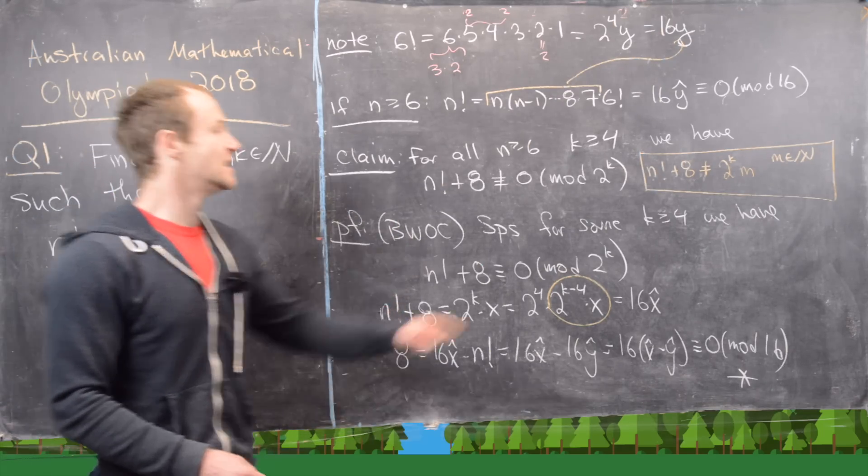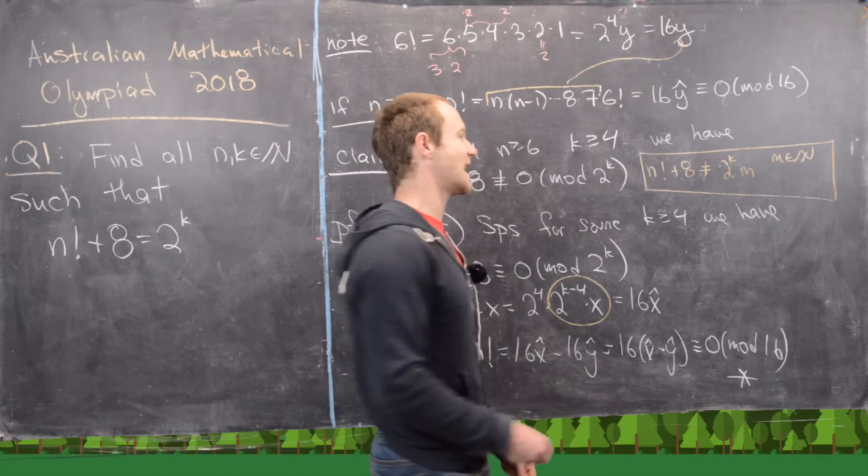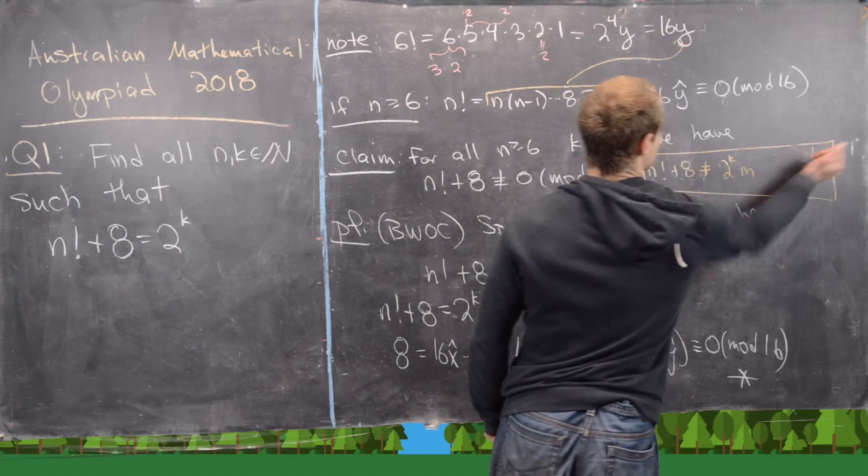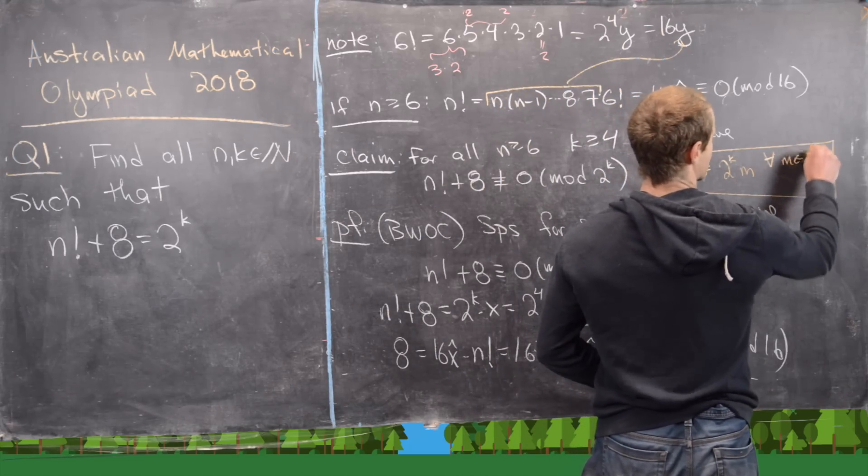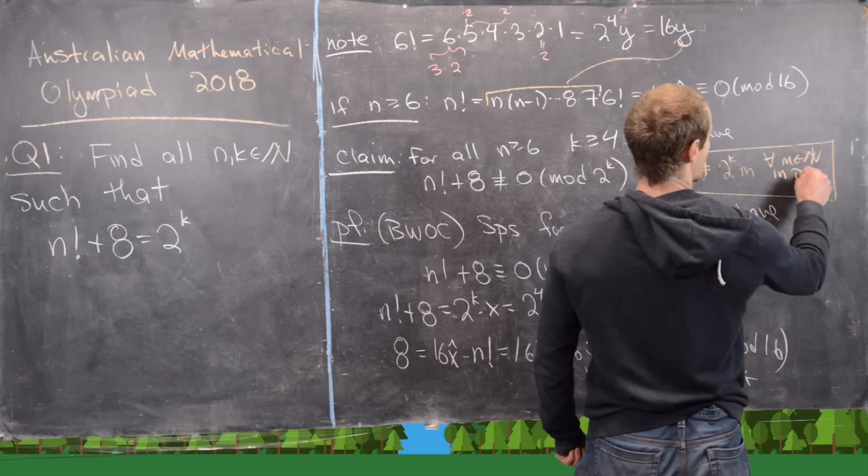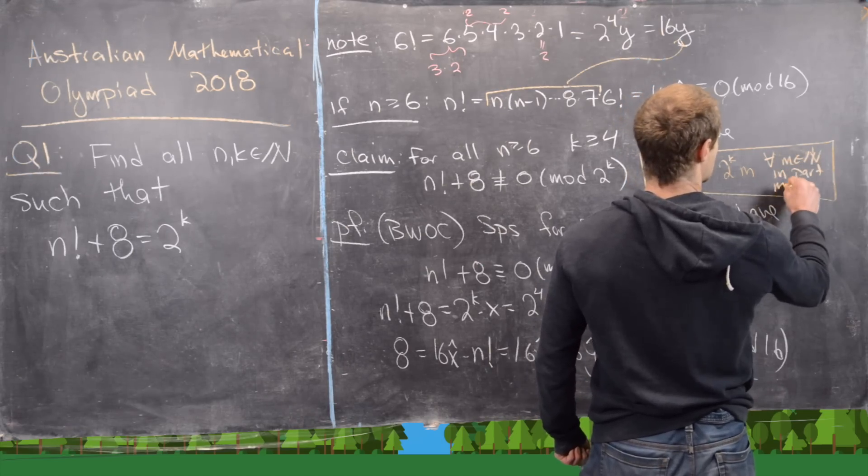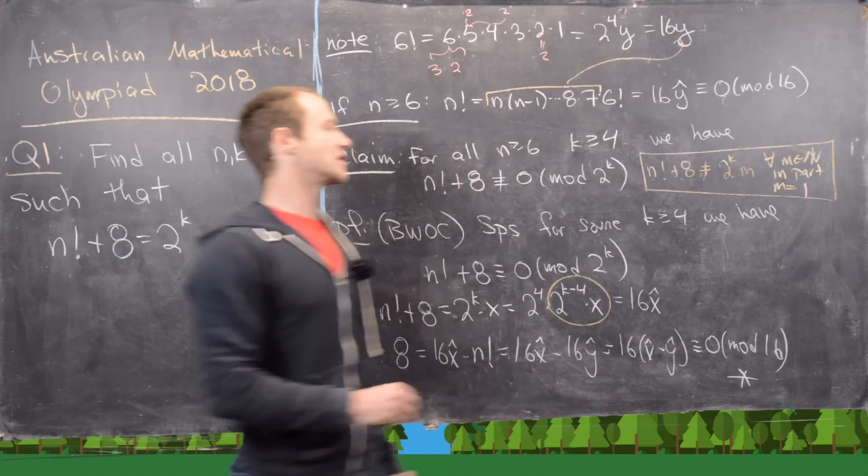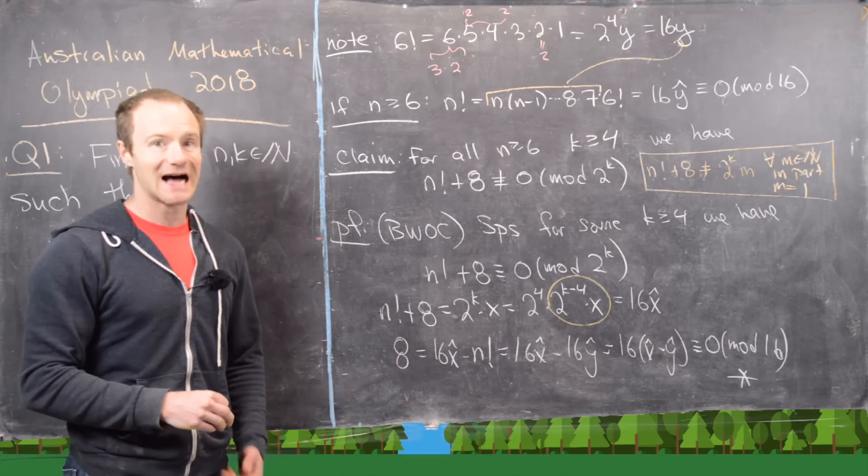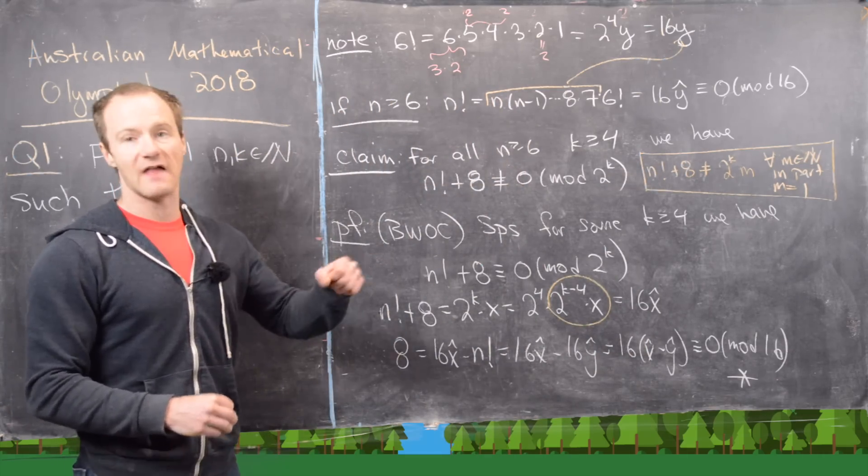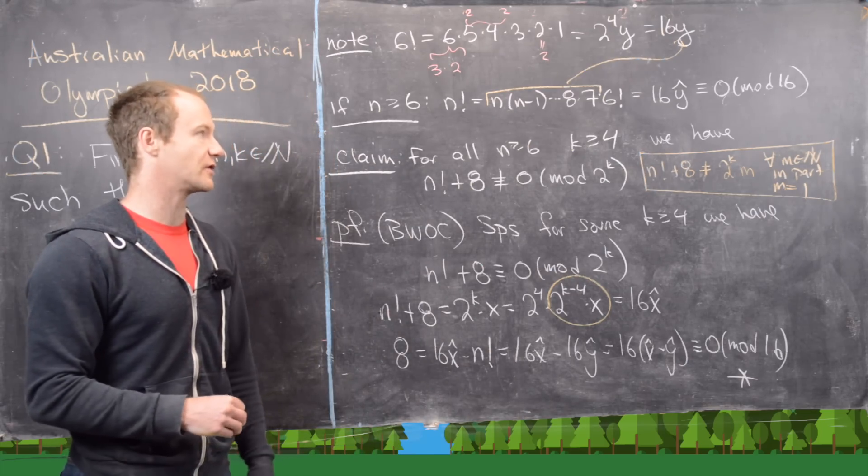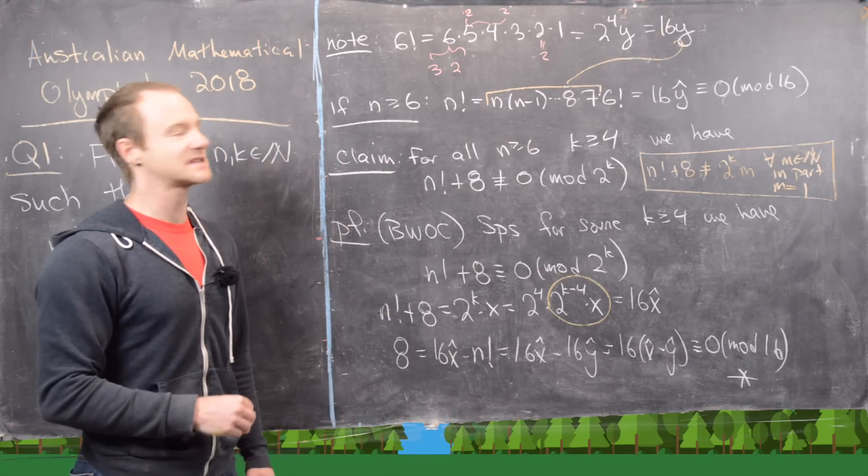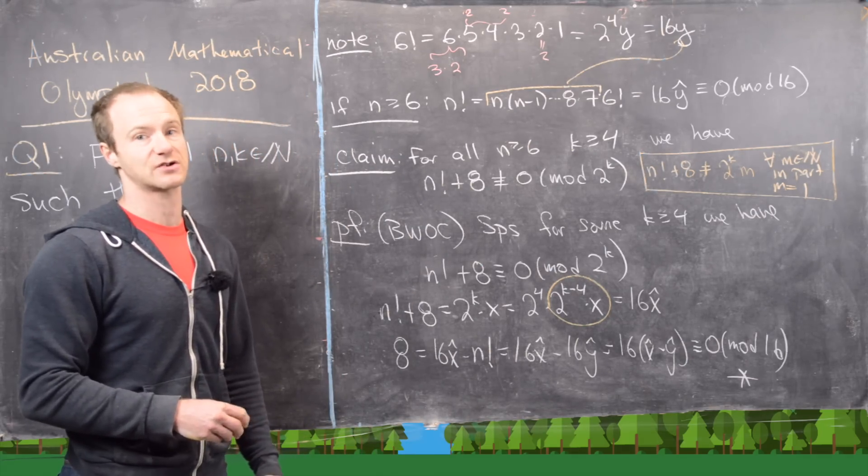But now notice proving this means that n factorial plus 8 is not equal to 2 to the k times m for all natural numbers m. And in particular, m equals 1. So in other words, n factorial plus 8 is not equal to 2 to the k. And that holds for all k bigger than or equal to 4 and n bigger than or equal to 6. So let's clean this up and then we'll look at the special cases.